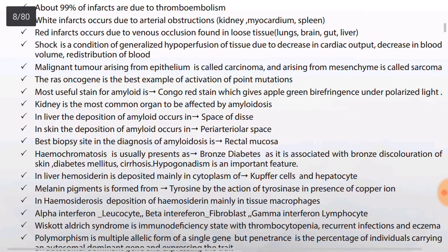About 99% of infarcts are due to thromboembolism. White infarcts occur due to arterial obstructions — in kidney, heart, and spleen. Red infarcts occur due to venous occlusion, found in loose tissues like lung, brain, gut, and liver. Just remember: red infarcts do not occur in red blood — it is opposite. White infarcts are due to arterial obstruction in kidney, myocardium, and spleen. Shock is a condition of generalized hypoperfusion of tissue due to decreased cardiac output, decreased blood volume, and redistribution of blood.